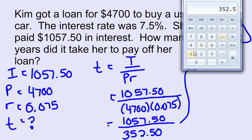One last step. I'm going to divide 1,057.50 divided by 352.50 gives me 3.